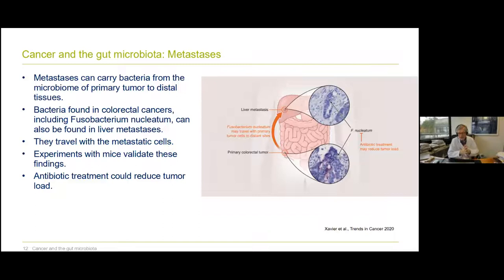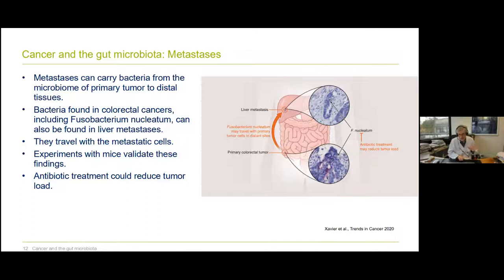Interestingly, even metastases have the same bacteria as the primary tumor. When tumor cells metastasize from the primary tumor to a distant organ, they carry bacteria from the primary tumor to the distal tissues. The same bacteria found in colorectal cancer primary tumors are also found in metastases — they travel alongside metastatic cells. In mice, antibiotic treatment could reduce the tumor load in this context, suggesting some potential for future treatment.